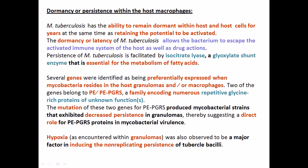Examples include the PE and PE_PGRS gene families, which encode numerous repetitive glycine-rich proteins of different, still unknown functions. We still don't know those functions, but they produce glycine-rich proteins. Mutation of those two genes — PE and PE_PGRS — produced mycobacterial strains that exhibited decreased persistence, telling us that these genes have a vital role in helping the dormancy of the bacteria in granulomas.